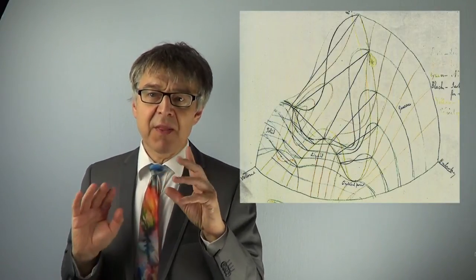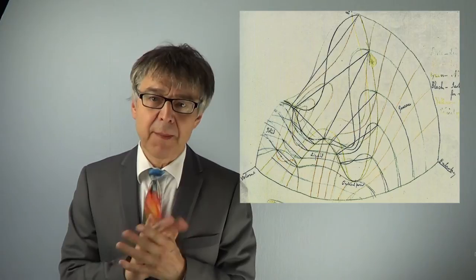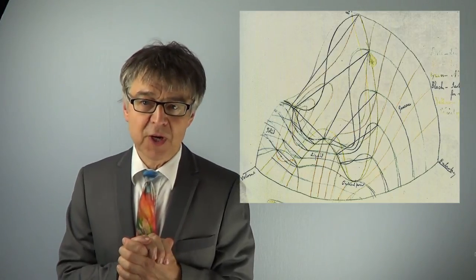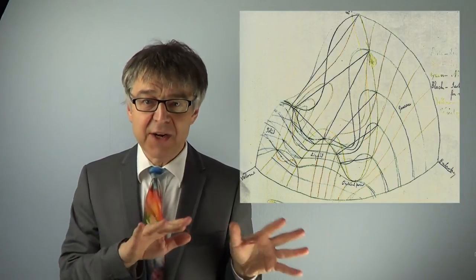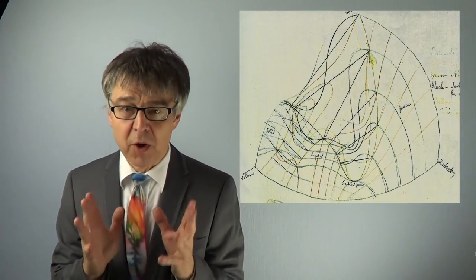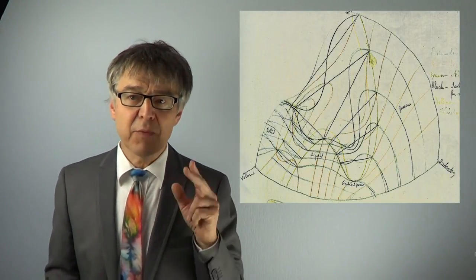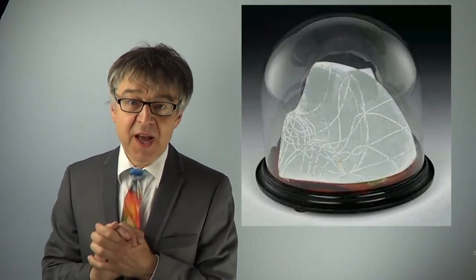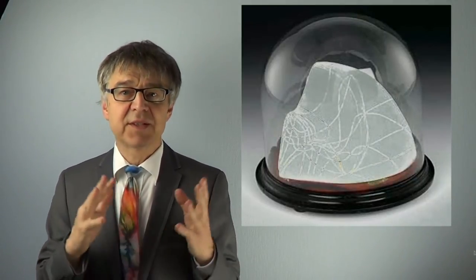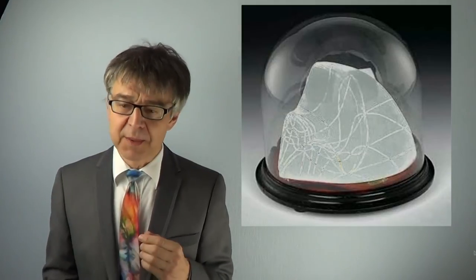In fact, Maxwell was so fascinated by Gibbs' geometrical approach, that he spent about seven months from November 1874 to July 1875 to calculate the energy-entropy-volume surface of water and build a 3D clay model of it. He made several plaster casts of the surface and sent one of them as a token of his esteem to Gibbs.